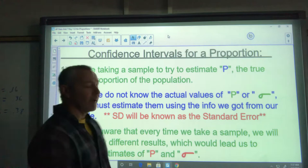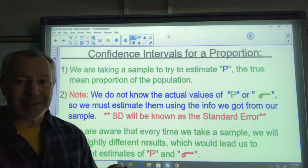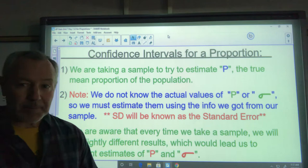We do not know the actual values of P or sigma. Those are parameters. We will only know statistics. We'll only know the P hat that we got, and then we'll calculate a standard deviation using that, which is not the right P we know. So we'll call that the standard error.